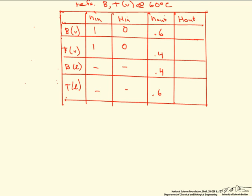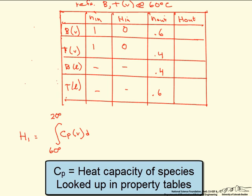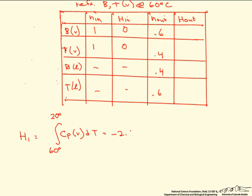So let's figure out the rest of the enthalpies and we'll start with the first one, H1. And our reference is 60 degrees as a vapor. So what we have to do is start at the reference temperature, which is 60 degrees, and take the integral to our final temperature, which is 20 degrees. And this is the heat capacity of the vapor, DT. And if we calculate that, that is minus 2.96.